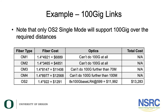Moving to 100 gig, none of the multi-mode fiber types — none of the OM fiber types — will support 100 gig over any of the required distances. Single-mode absolutely will. The single-mode interfaces are dramatically more expensive, about six times the cost of multi-mode interfaces for 100 gig, but at least you can build the network. Here, the optics start to dominate the cost, but it's the only option that works.